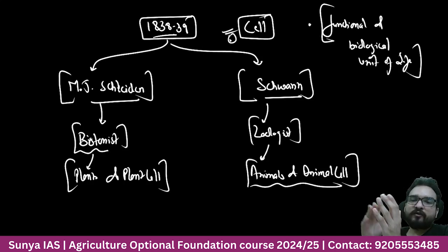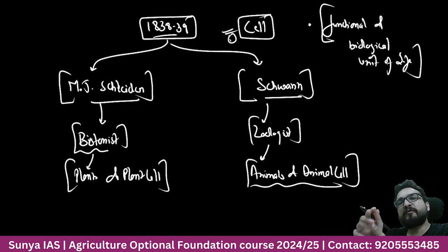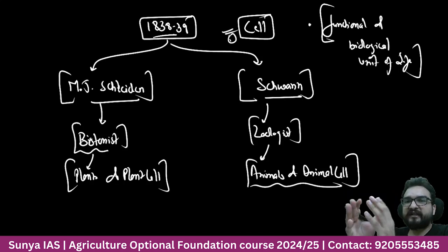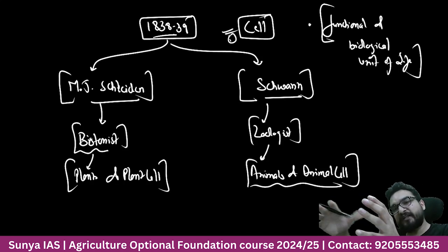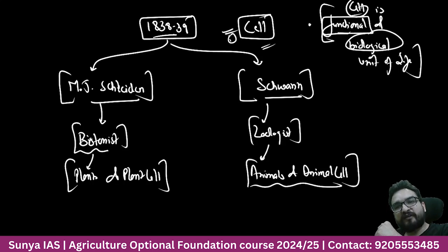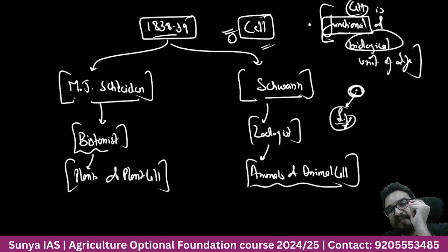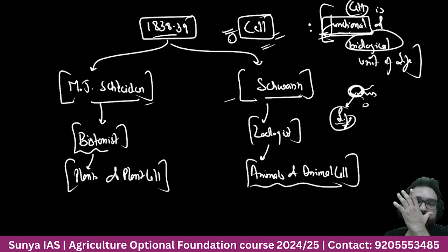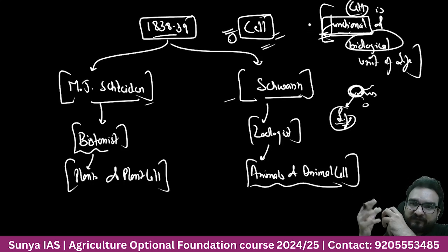Schleiden and Schwann told us that plants and animals are superficially different but at the cellular level are made up of the same thing — cells. A cell is capable of everything: it can digest, absorb, and breathe. However, one thing they could not answer was how the cell divides — how this division takes place.